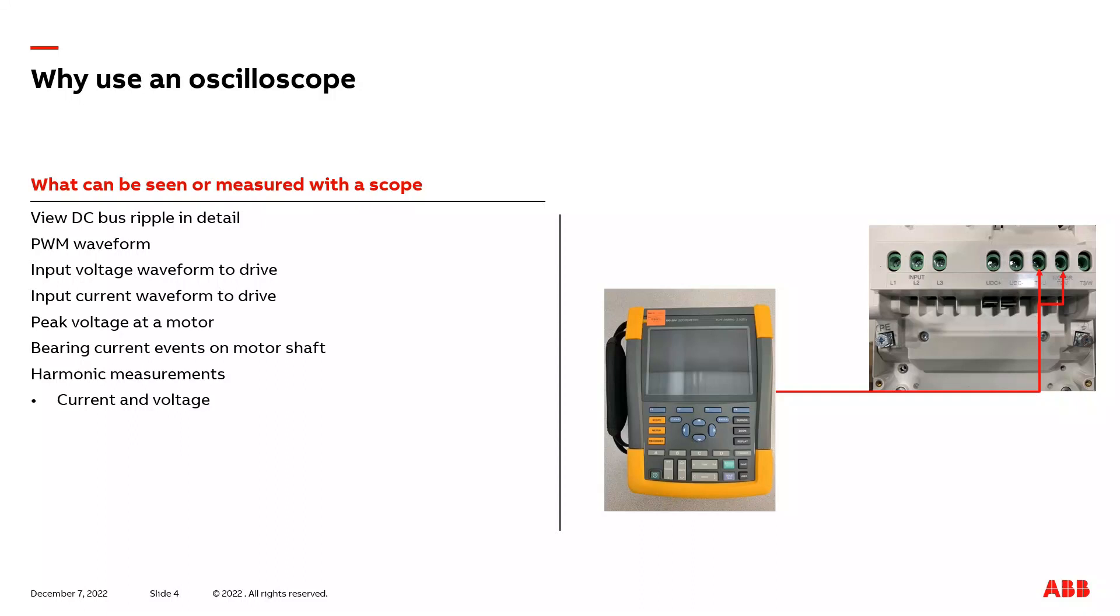If we take a scope and apply it at the motor, we can look at the peak voltage at the motor terminals and see if it is too excessive to determine if maybe we need an output drive filter. Or we can also take the scope and apply it between the motor frame and motor shaft to determine if we have any bearing current problems. We would be looking for a quick rise in voltage and a quick drop when we take a measurement between the motor frame and motor shaft for bearing currents. And then for some higher end scopes, they have the ability to measure input current and voltage harmonics.